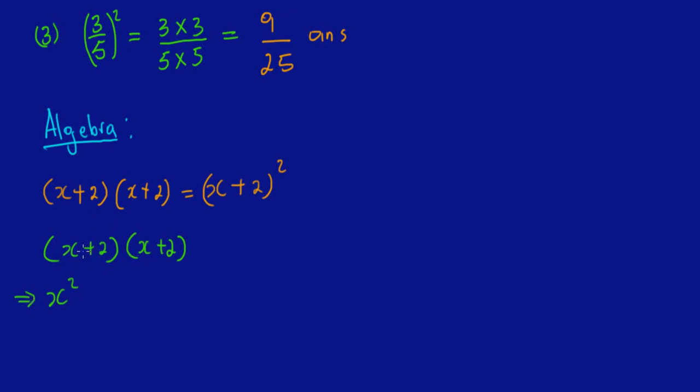And 2 times 2 gives us positive 4. So this implies that when we simplify this quadratic expression, we would have x squared plus 4x plus 4.